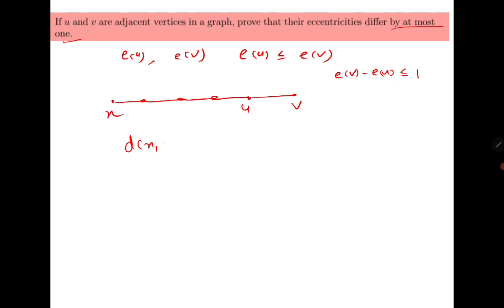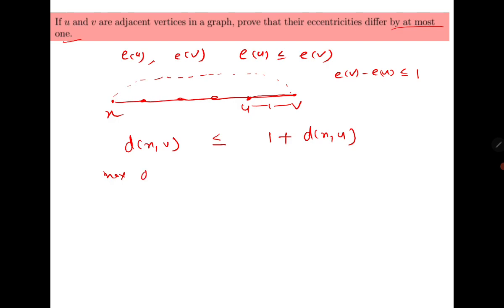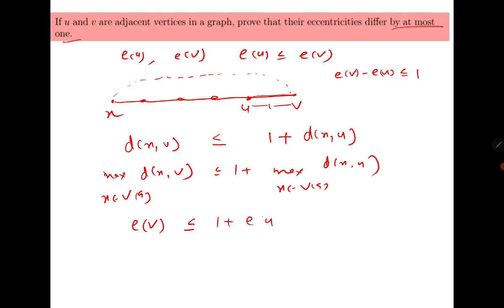The distance from x to v: if we go from x to v, we can go from v to u and then take the shortest path from u to x. So d(x,v) ≤ 1 + d(x,u), because distance represents the shortest path. Taking the maximum on both sides: max d(x,v) ≤ 1 + max d(x,u), which gives e(v) ≤ 1 + e(u).